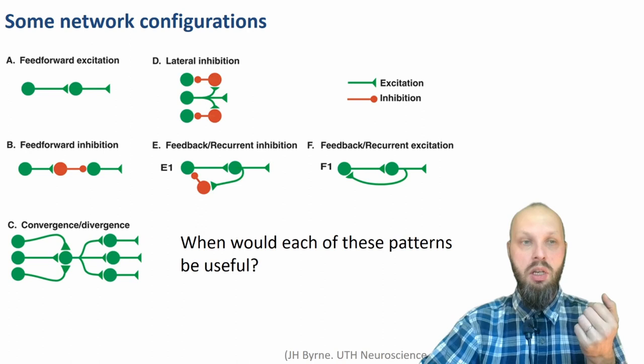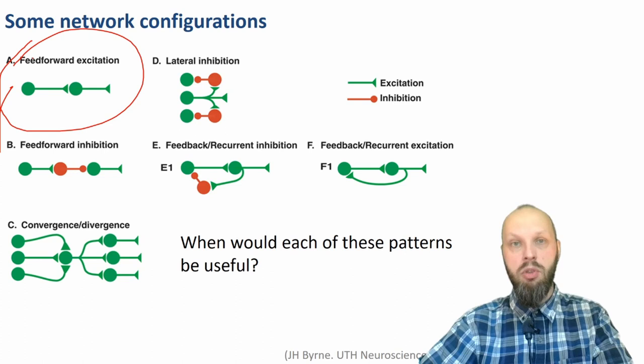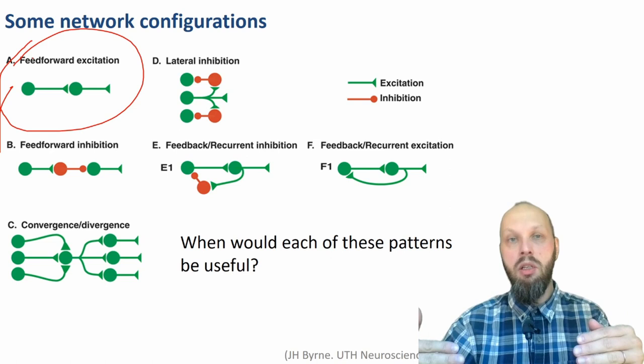The most obvious motif is feedforward excitation, where you have an excitatory neuron — excitatory neurons are shown in green — connected to another excitatory neuron, or a bunch of excitatory neurons, that are connected to other excitatory neurons and so on. This is what most of the brain is: feedforward networks where information propagates from one neuron to another, from one layer of neurons to the next.